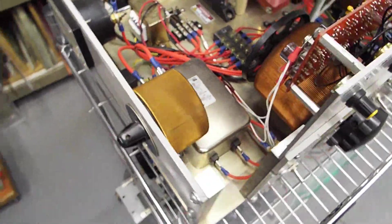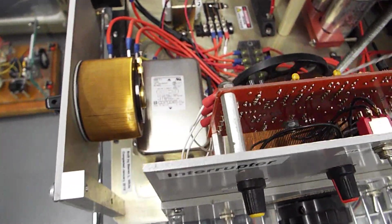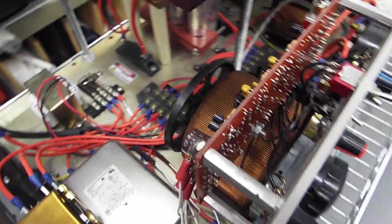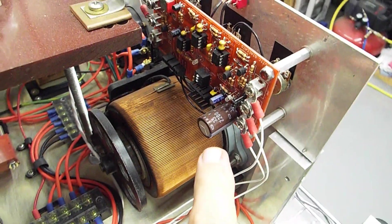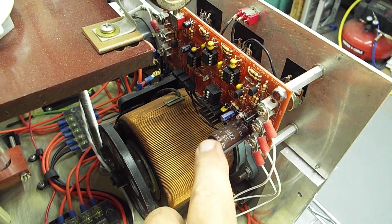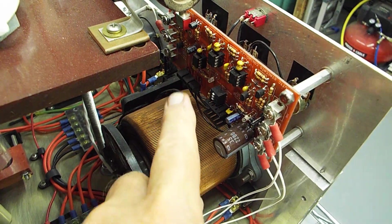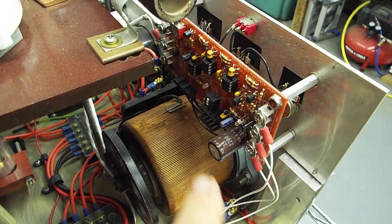And if we go over here, looking behind the main front panel, this is the interrupter circuitry, this is the only solid-state circuitry on the vacuum tube Tesla coil.